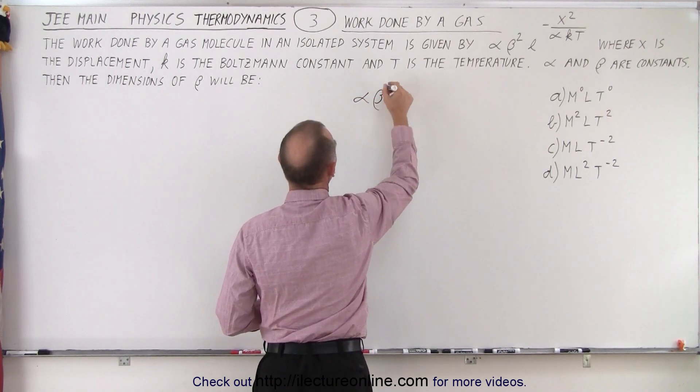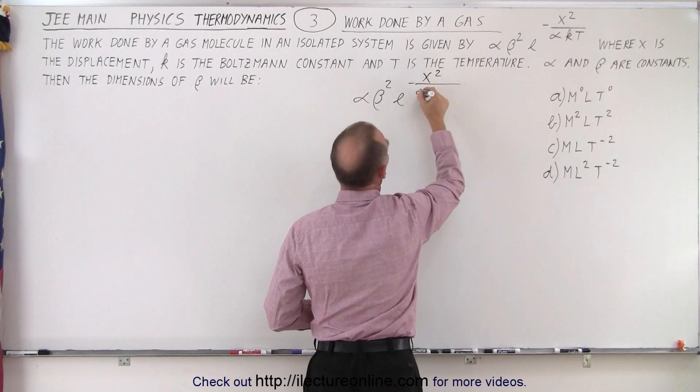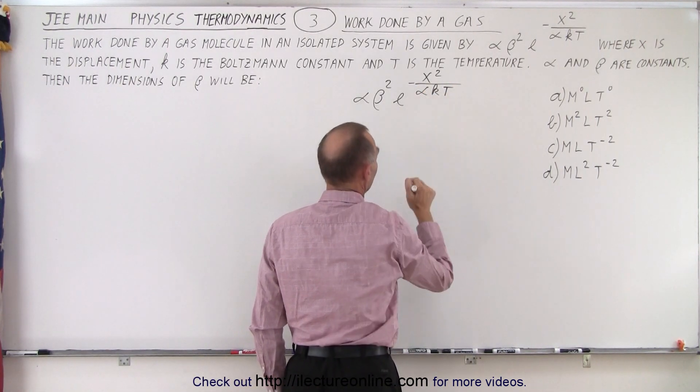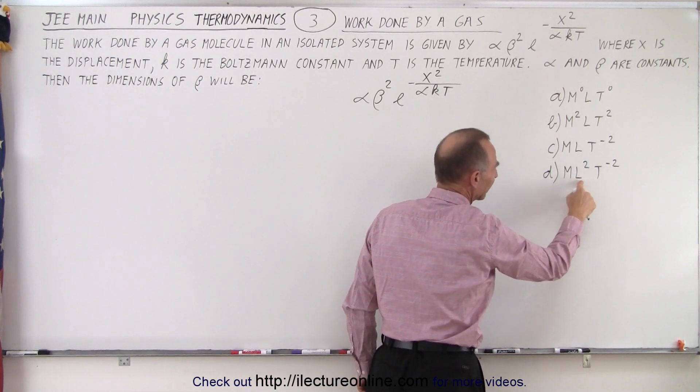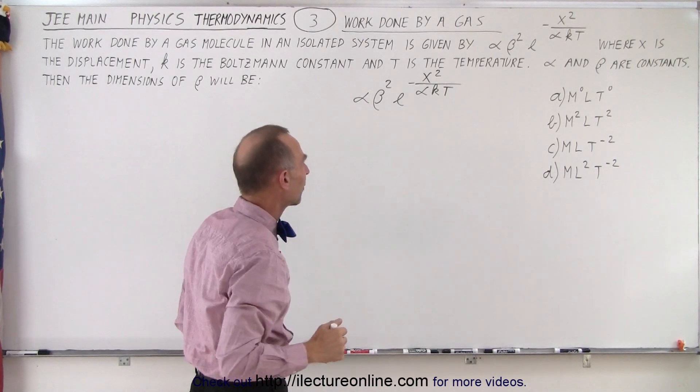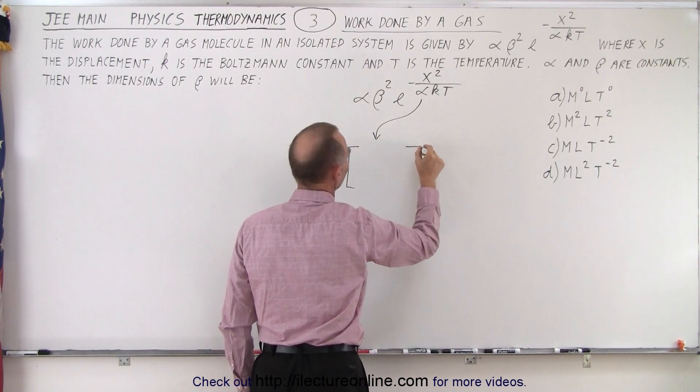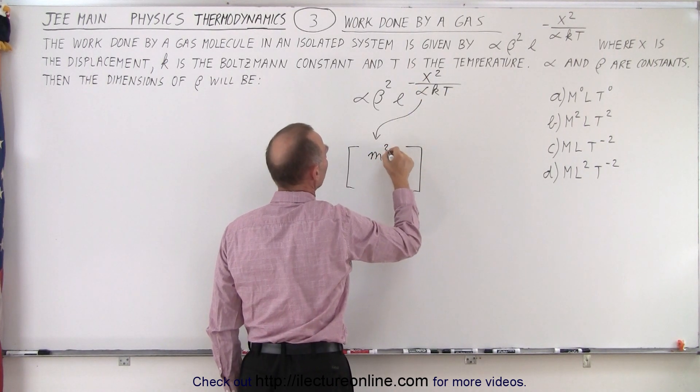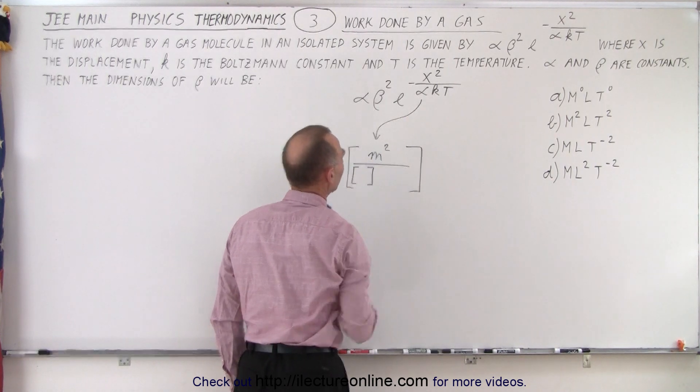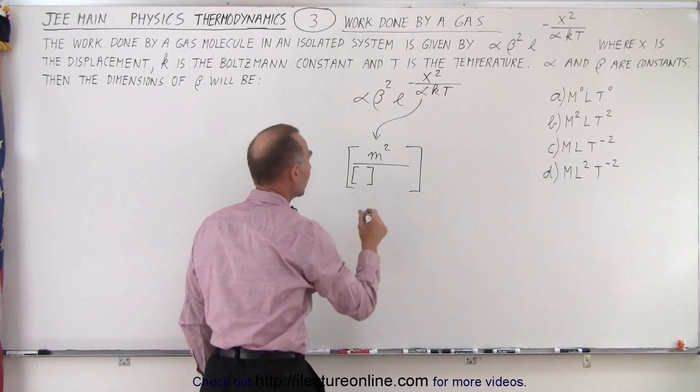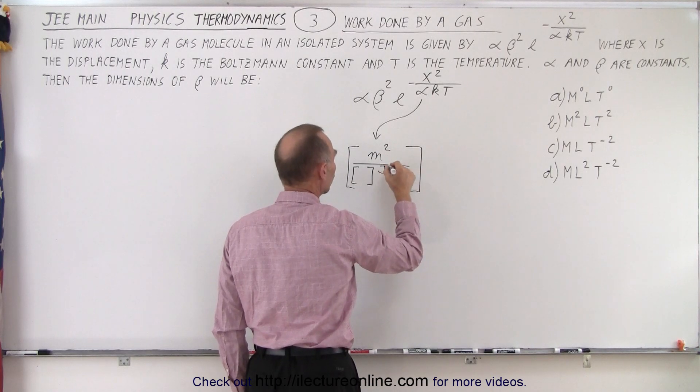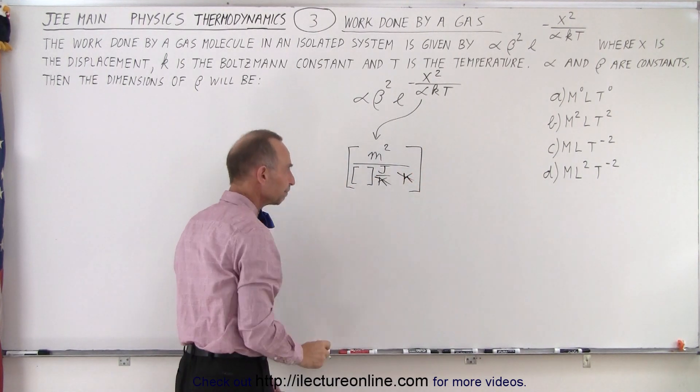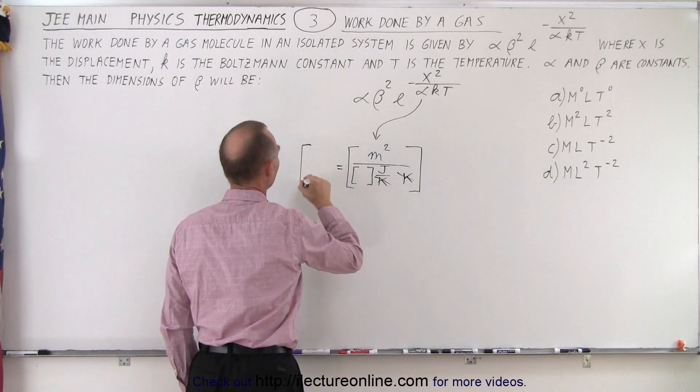We have alpha beta squared e to the minus x squared over alpha kt. All right, we're now going to try to determine the units of everything in here, including alpha. And so, rather than using m for mass, l for length, and t for temperature, I like to use the actual unit that makes it easier to comprehend. So let's take this exponent here and let's see what we have. So we have the units of x, which is distance, displacement, so that would be meters, and since it's squared, we get meters squared in the numerator, divided by the units for alpha. Now we don't know yet what those are. The units for the Boltzmann constant. Well, let's see here. Boltzmann constant would be joules per Kelvin. So joules per Kelvin, and the unit for temperature is Kelvin. So right away, you can see that Kelvin and Kelvin cancel out, and this has to equal essentially zero.